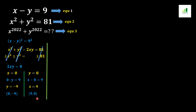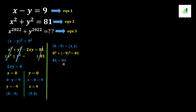Now I insert the ordered pairs to check whether they satisfy equation 2. For x equals 0 and y equals minus 9: 0 squared plus (minus 9) squared equals 0 plus 81 equals 81, which matches the right side. So this is an acceptable solution.